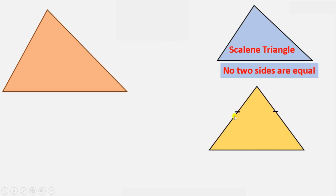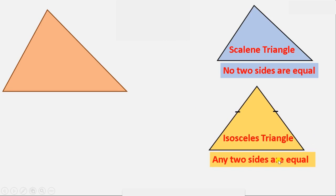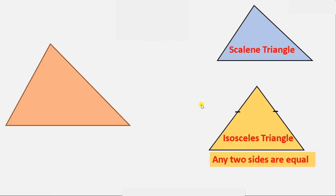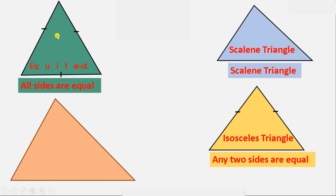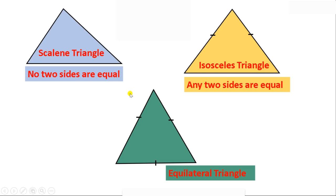According to sides, types of triangles: if any two sides are equal, it is an Isosceles triangle. If all sides are equal, it is an Equilateral triangle. If no two sides are equal, it is a Scalene triangle.